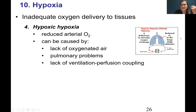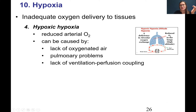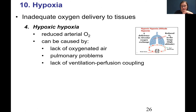There's also a type called hypoxic hypoxia, which just means you don't have enough arterial O2. This can come from not being able to breathe oxygenated air, pulmonary problems that don't allow you to respire to the degree you need to get enough oxygen into the alveoli, or a lack of ventilation-perfusion coupling, which can also lead to hypoxic hypoxia.